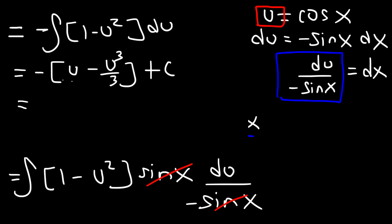I'm going to distribute the negative sign and then reverse the two variables. So it's going to be plus 1 third u to the third and then minus u plus c.